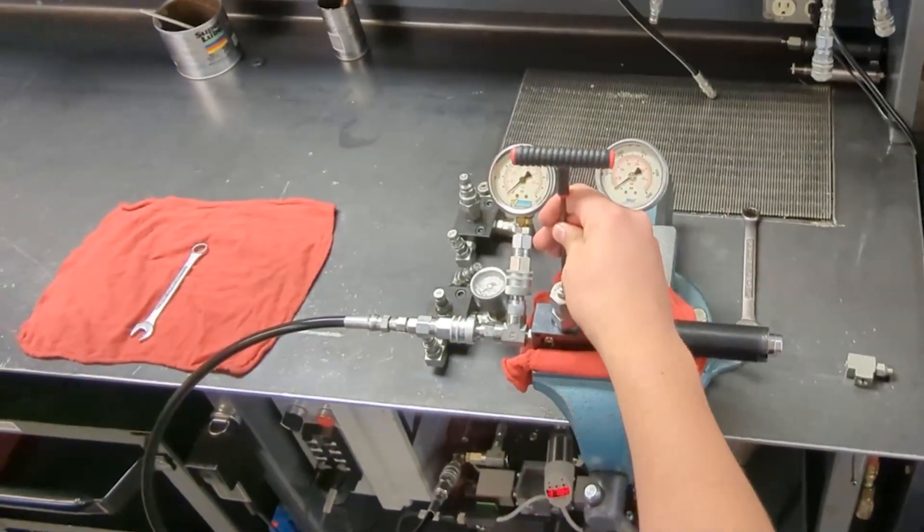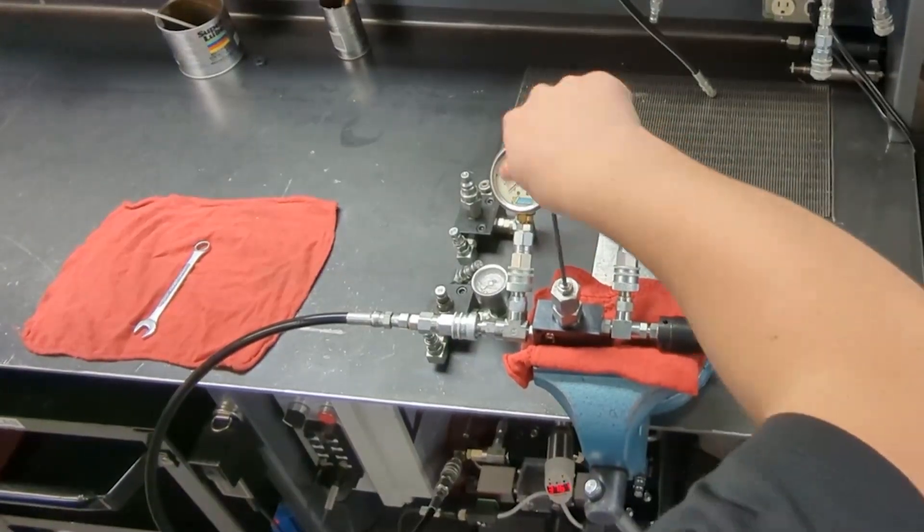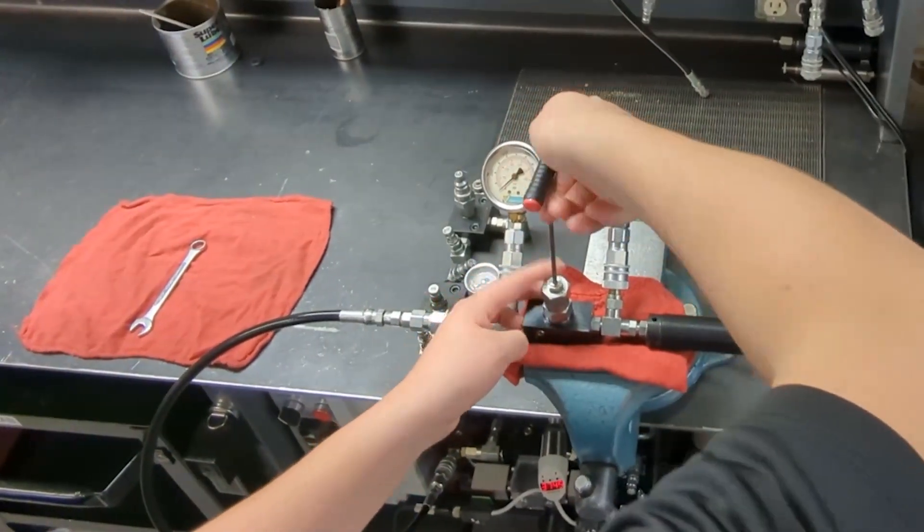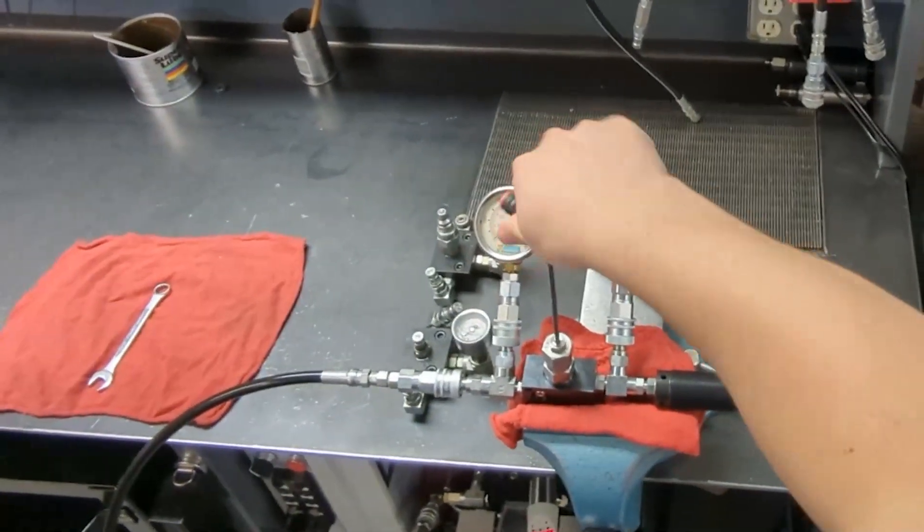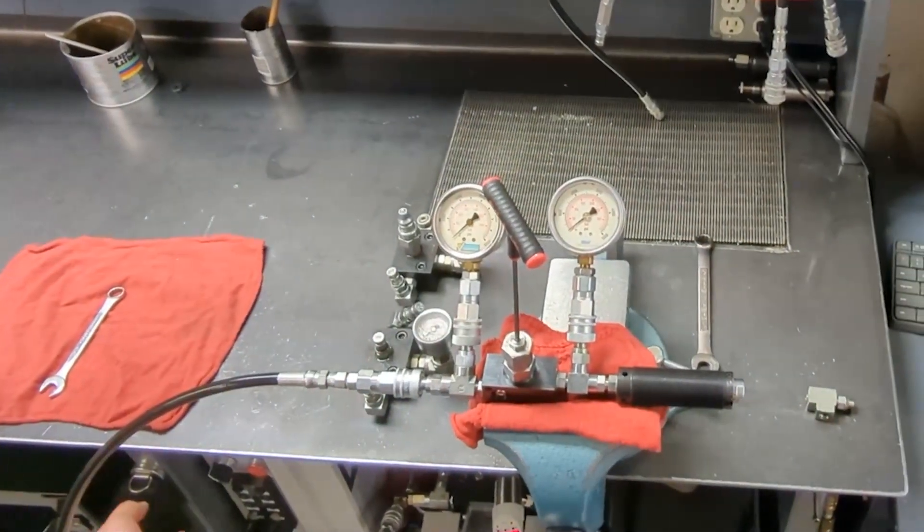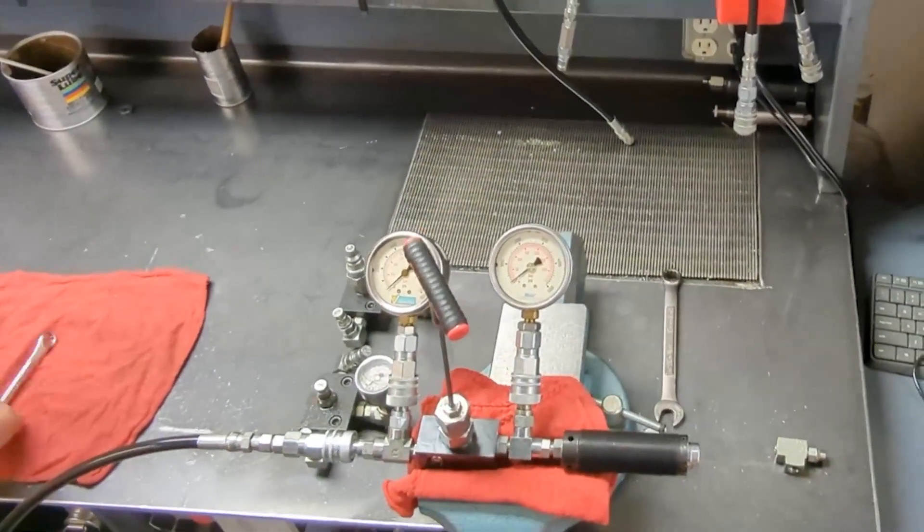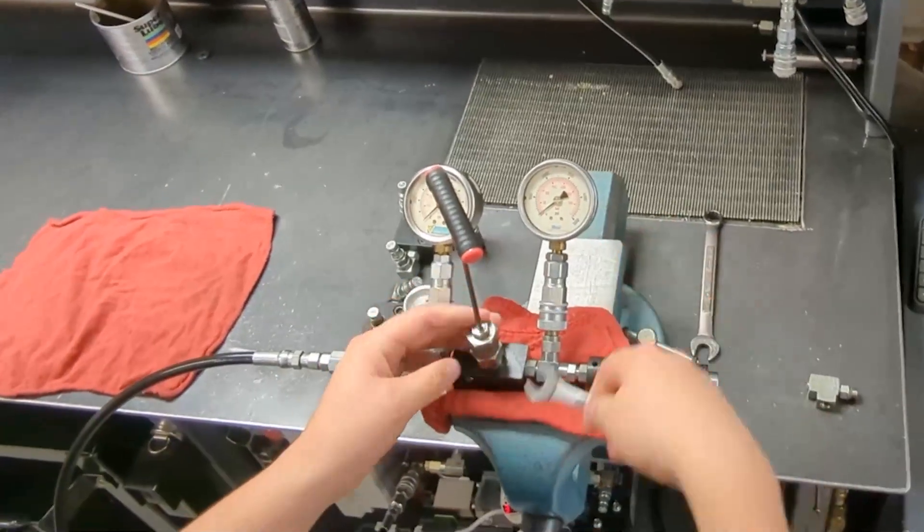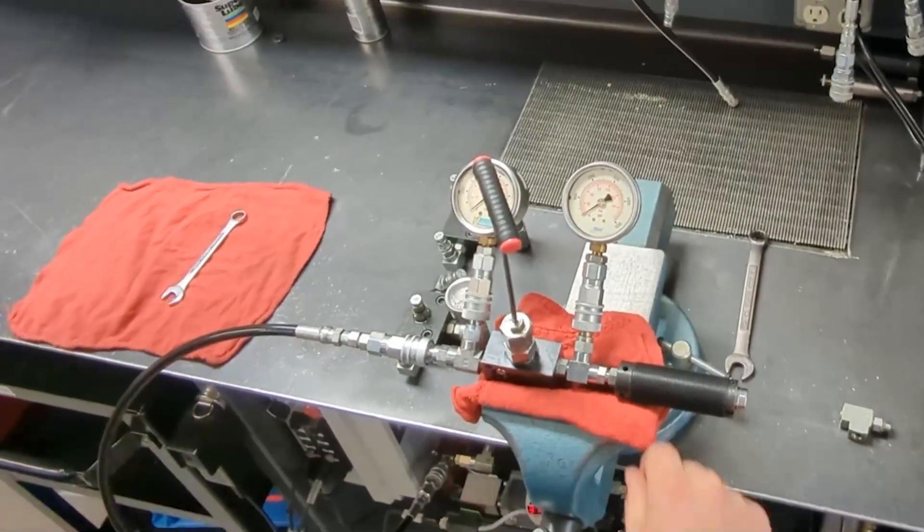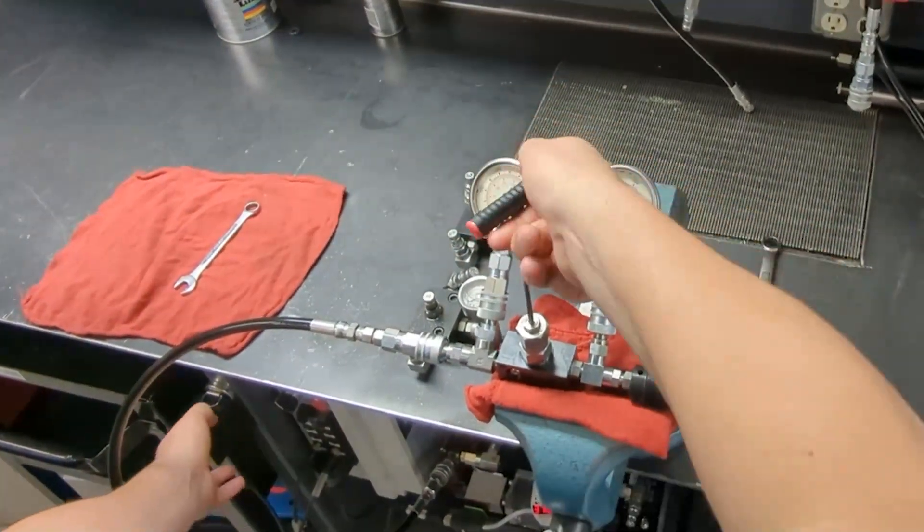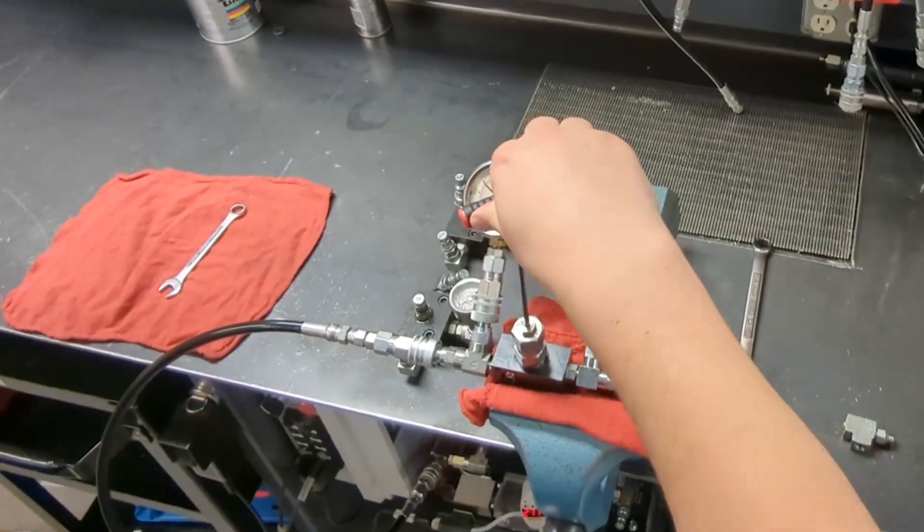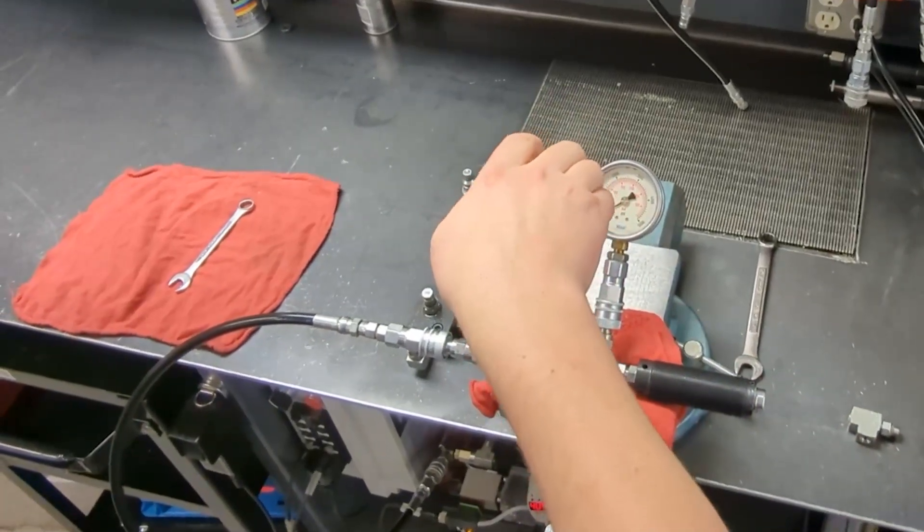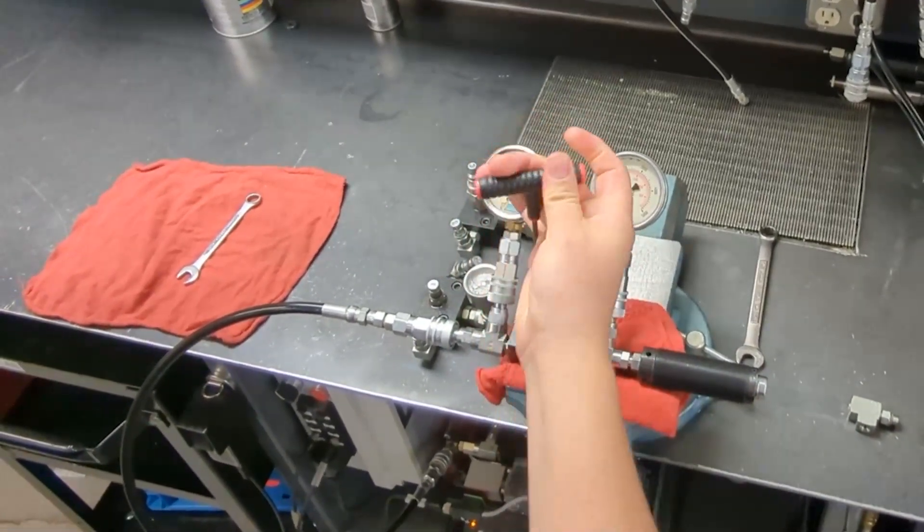If you have a bank of sequence valves, one method is to adjust all of the set screws all the way in, pressurize it, and then back the screw out until it opens.